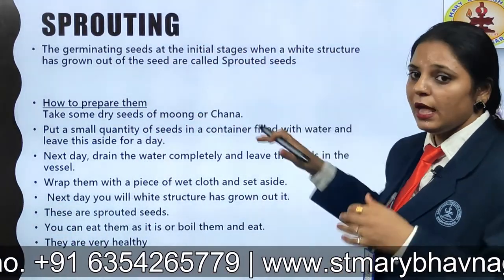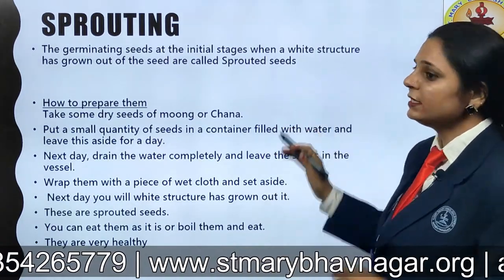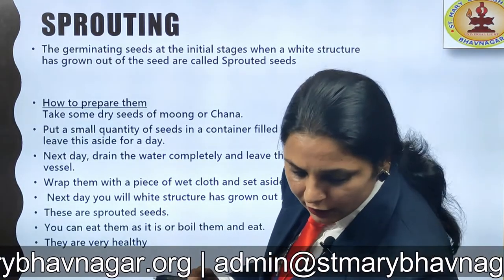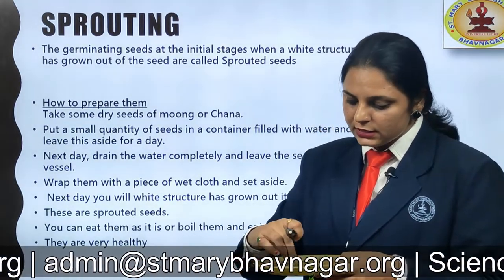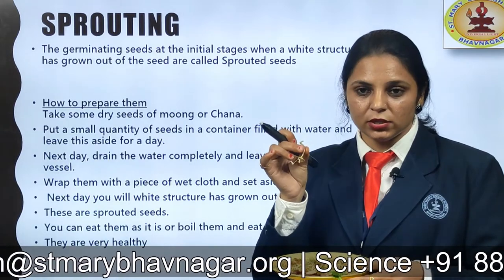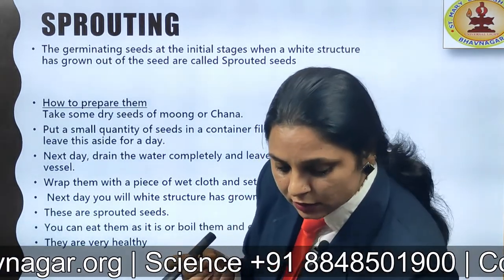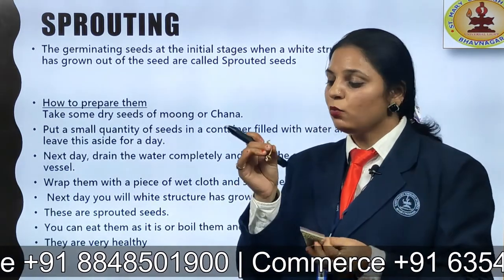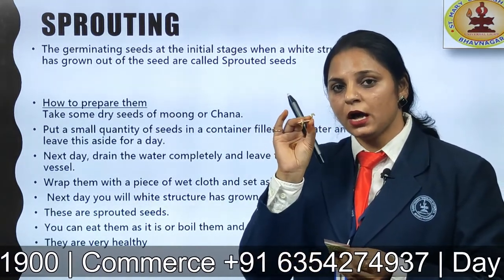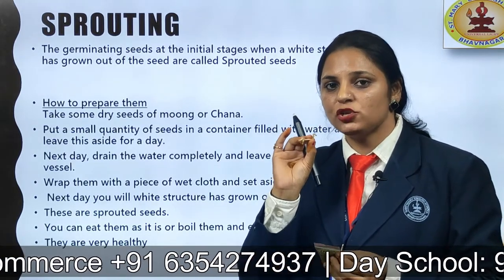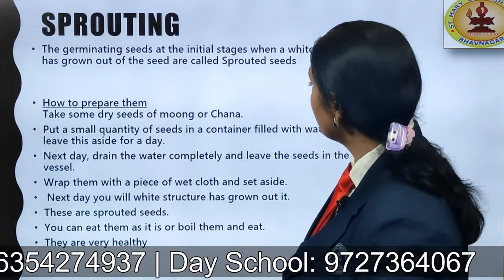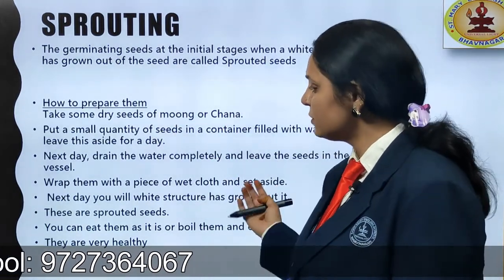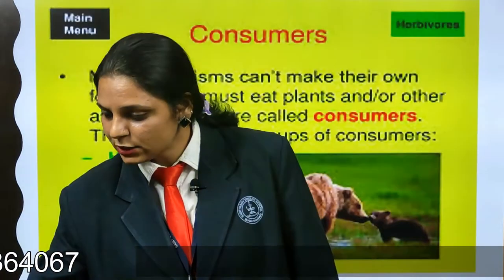The germinating seeds at the initial stage, when a white structure has grown out of the seed, it is called a sprouted seed. You can see here this white structure coming out from the mung seeds — that is the germination process, and it is known as sprouting. These are the steps for how you can make sprouted seeds.